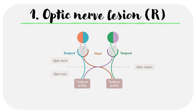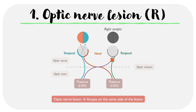In exactly the same way, when there's an optic nerve lesion on the right side, both the green and purple lines are affected. Tracing the green line, the temporal retina is lost and therefore the nasal visual field is impaired. Tracing the purple line, we lose the nasal retina in the right eye and therefore the temporal visual field. This results in a right anopia. So summarizing, an optic nerve lesion will always lead to an anopia on the same side as the lesion.